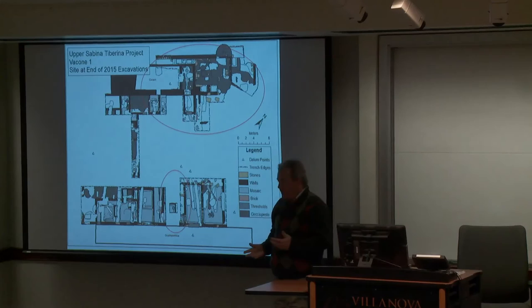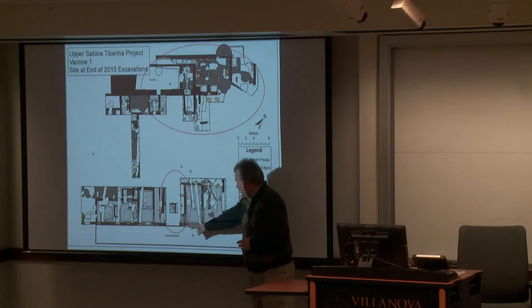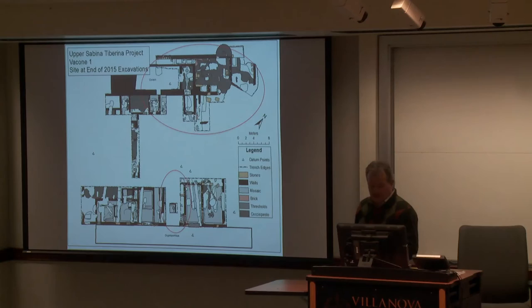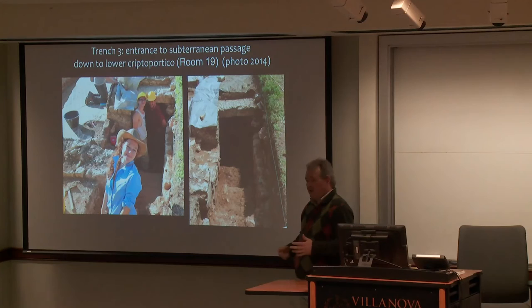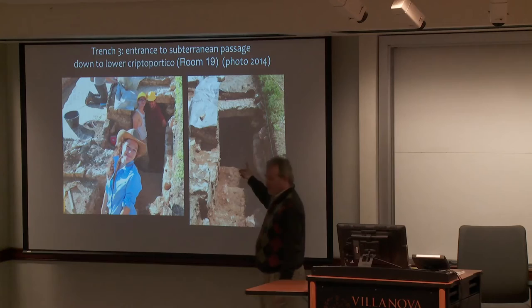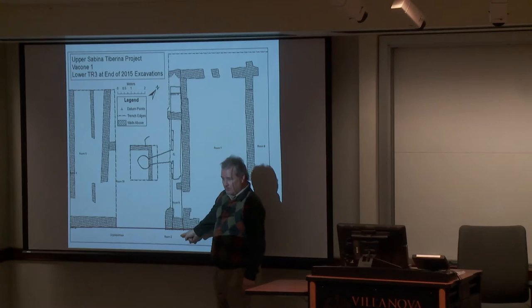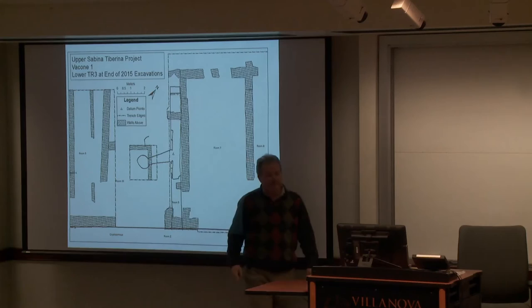I want to talk about a couple of discoveries from this past year. First, in 2013 while digging, somebody found a cavity — basically a hollow spot in the ground. As we kept digging, we found a tunnel going down. It turns out this was actually a tunnel going from the upper level all the way down into the cryptoporticus, with a little side tunnel going off to the side.